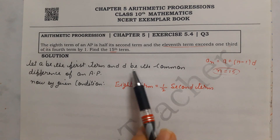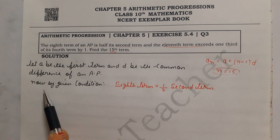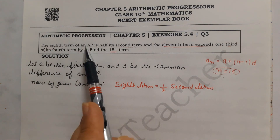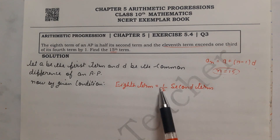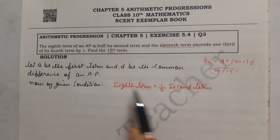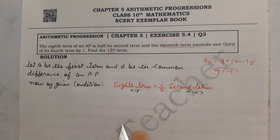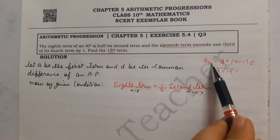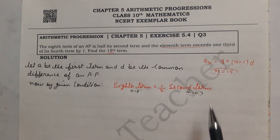Let a be the first term and d be the common difference of the AP. By the first given condition, the 8th term equals half of the second term. Since we need terms (not sum), we use the term formula. For the 8th term, n = 8; for the second term, n = 2. We will write both expressions and form one equation in a and d.